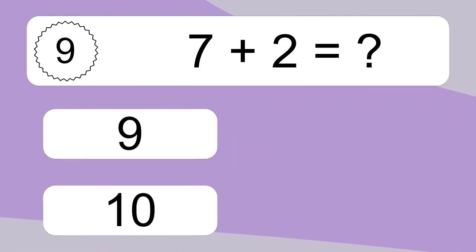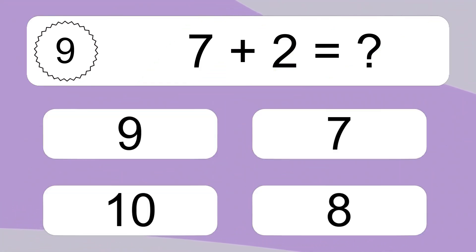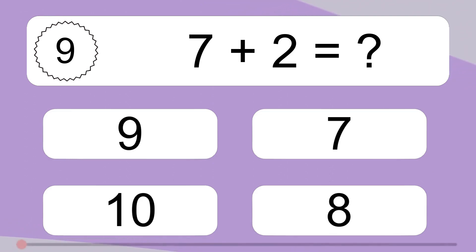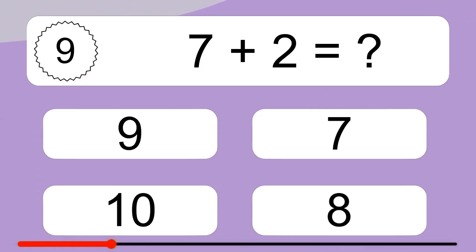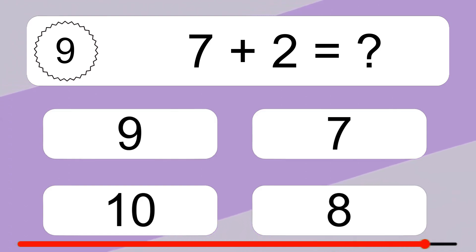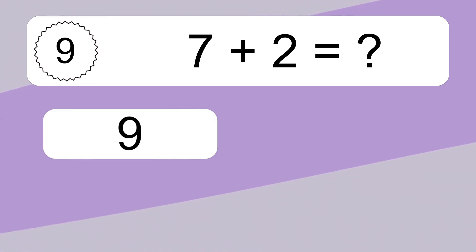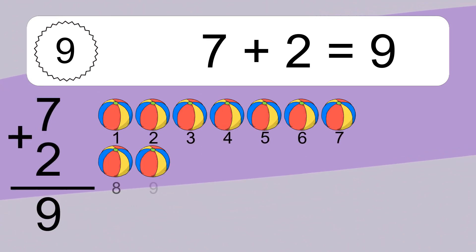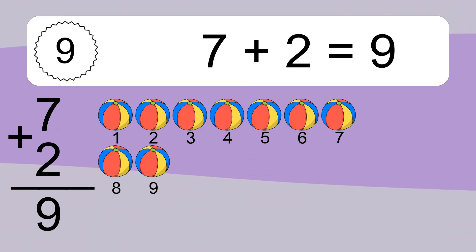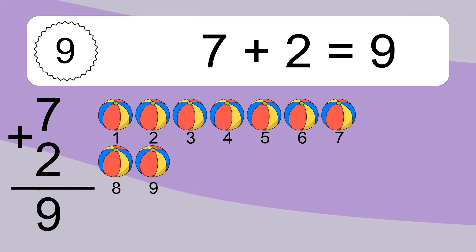7 plus 2 equals what? Let's count it. 1, 2, 3, 4, 5, 6, 7, 8, 9.